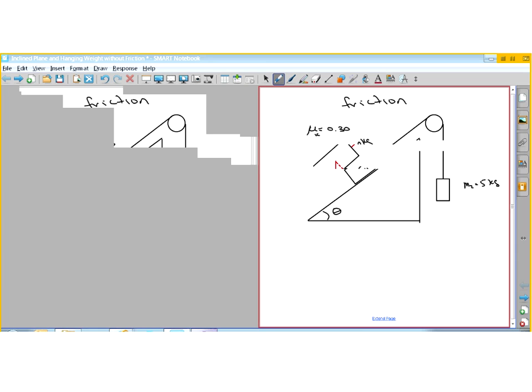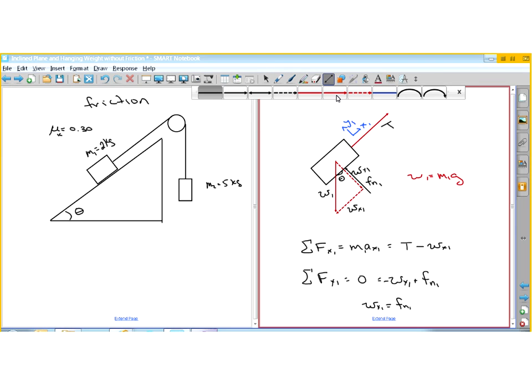So this is the previous free body diagram we had. The only difference is that now we're going to have this friction force acting here, which is going to oppose the motion. So I have one more unknown, and it's going to go in the negative x direction. This one stays the same. The normal force is still the same.